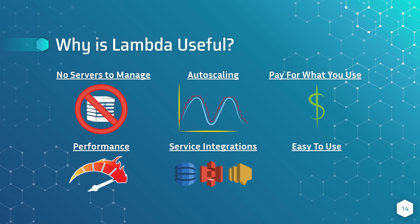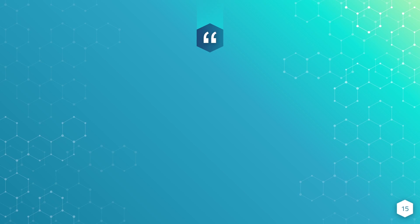That's why Lambda is useful, and why it's becoming more and more popular. Many organizations, both large and small, are deciding to use it. Even AWS itself, according to Werner Vogels, the CTO of Amazon, is seeing massive adoption of Lambda functions in their internal services. Now I want to talk briefly about some of the disadvantages of using Lambda. I found a quote that did a pretty good job describing the trade-offs: 'With AWS Lambda, you gain flexibility at the expense of control.'